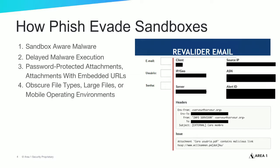Another trick is hiding malicious code in obscure file types, large files, or targeting malware for mobile and other operating environments. Because sandbox technologies and cloud sandbox services often have limitations on file types they can execute, file sizes, or operating environments they support — and in some cases even limit the number of files they'll analyze per hour — hackers can craft files with hidden malware that sandboxes won't detect.